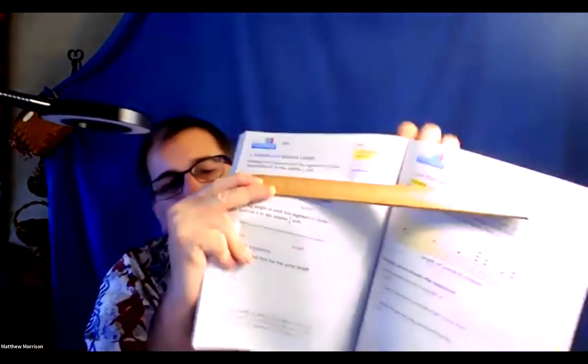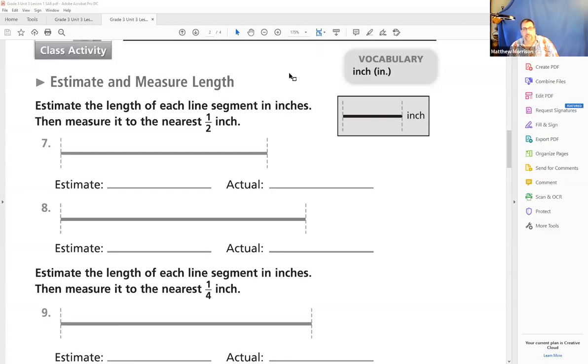So I was wrong in my estimate. That was close, I said four and it's actually three and a half. So let's write that. Okay so let's go back to our shared screen. I had estimated that I thought it was going to be four. Okay, four. And it actually was three and a half.